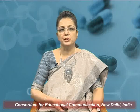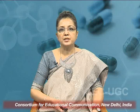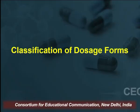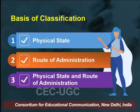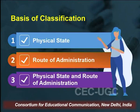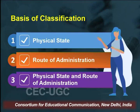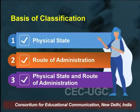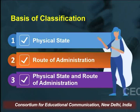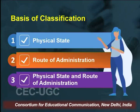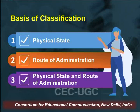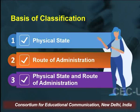Having understood the merits of a dosage form, the next important unit is to understand the basis of classification. The classification of dosage forms is on different bases: the first is on physical state, the second is on route of administration, and the third — most commonly used — is an integration of physical state and route of administration.